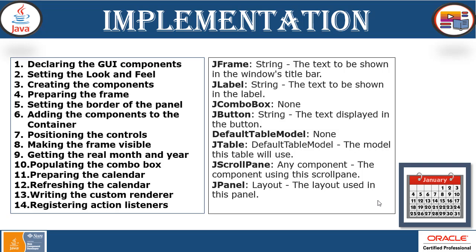Creating the component, preparing the frame, setting the corner of the pane panel, adding the component to the container, positioning the controls, then making the JFrame visible, getting the real month and year, populating the combo box, preparing a complete calendar — combining all these controls and the frames and labels you have made.